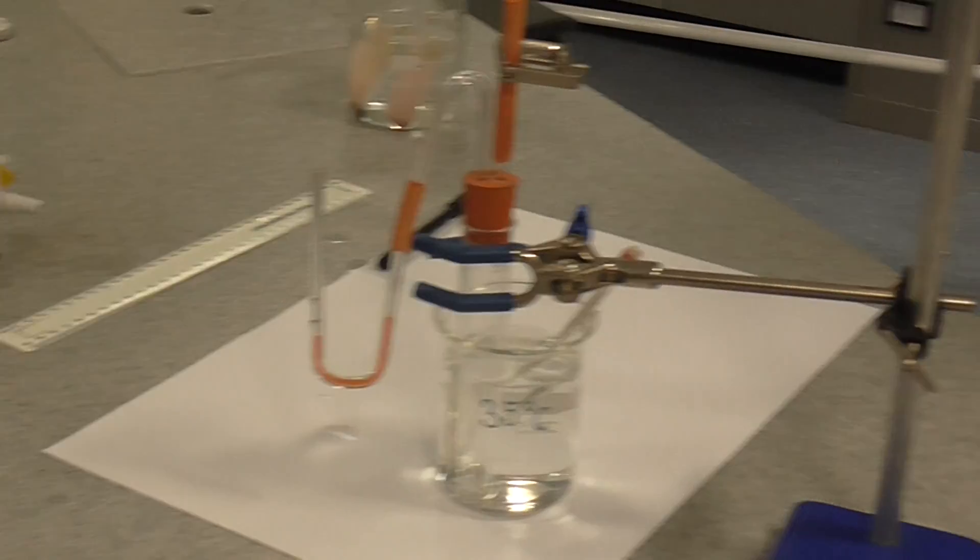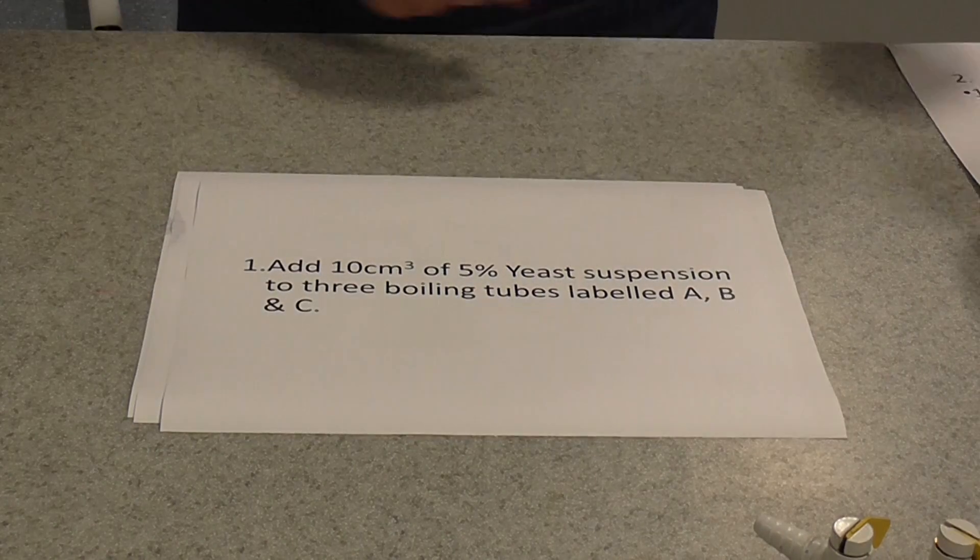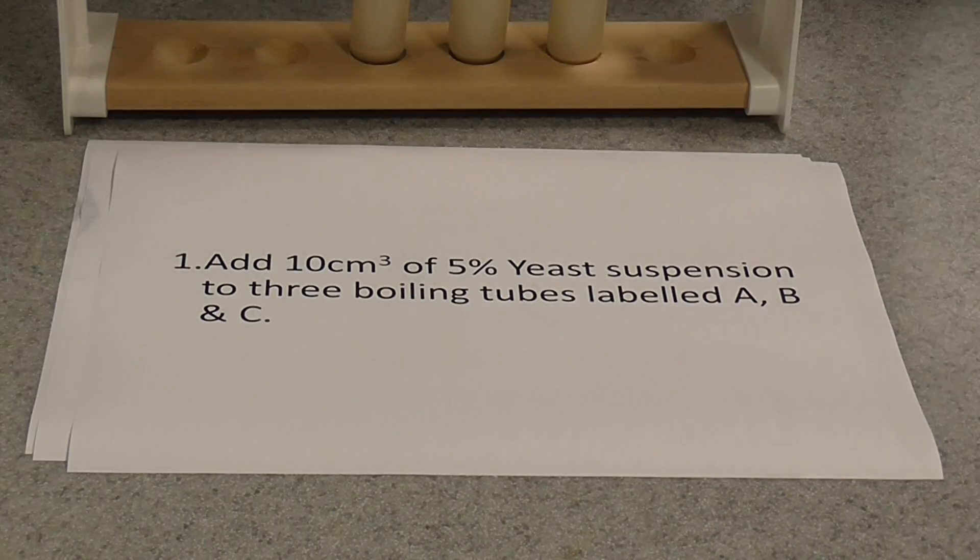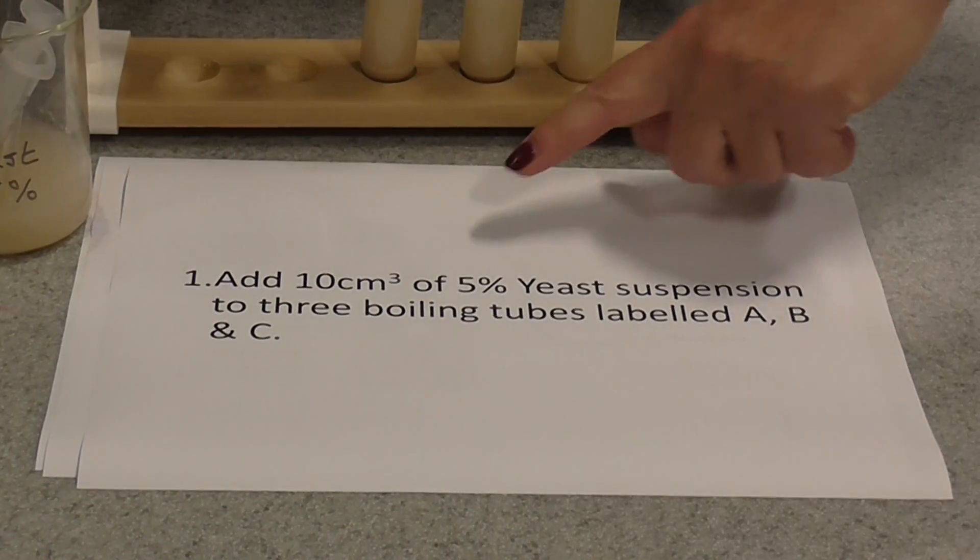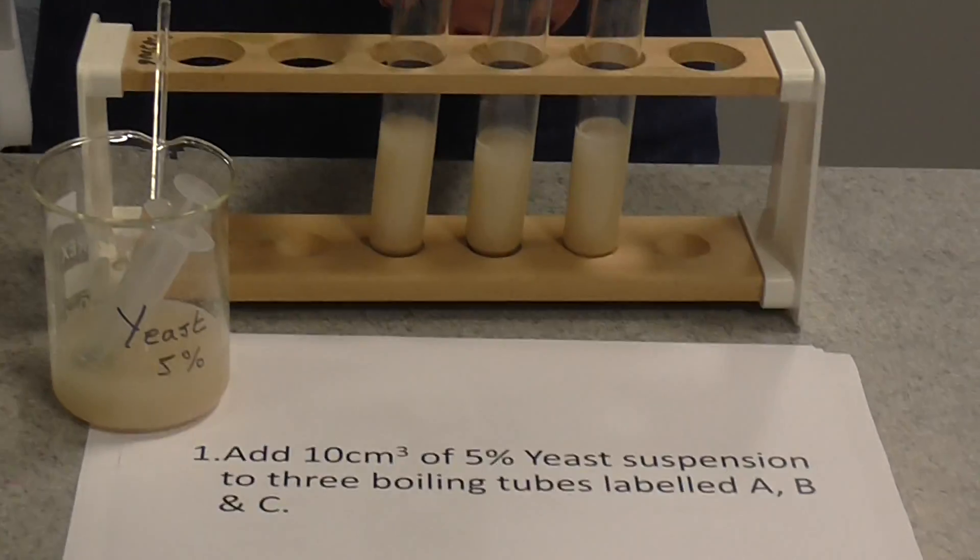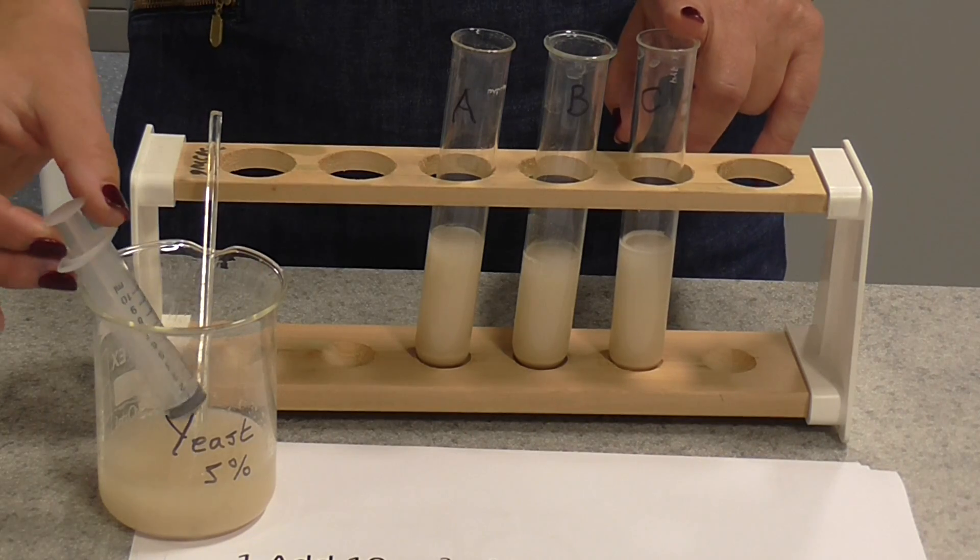Now the first thing you have to do in this investigation is to prepare your three boiling tubes for your three different sugars. And the first thing is to add 10 centimeters cubed of 5% yeast suspension to each of your tubes, which you've labeled A, B and C. You can use a syringe to do that.